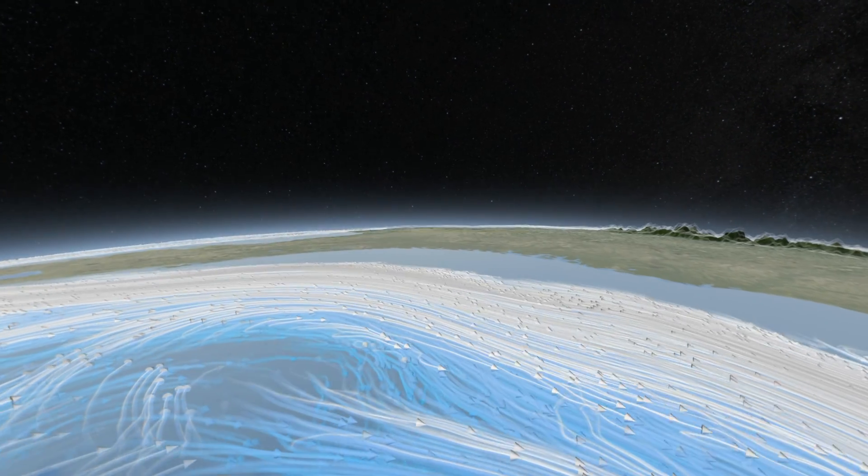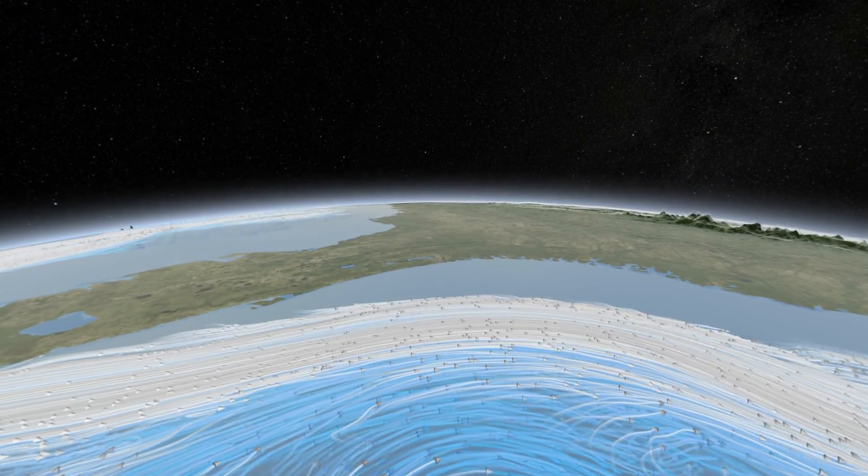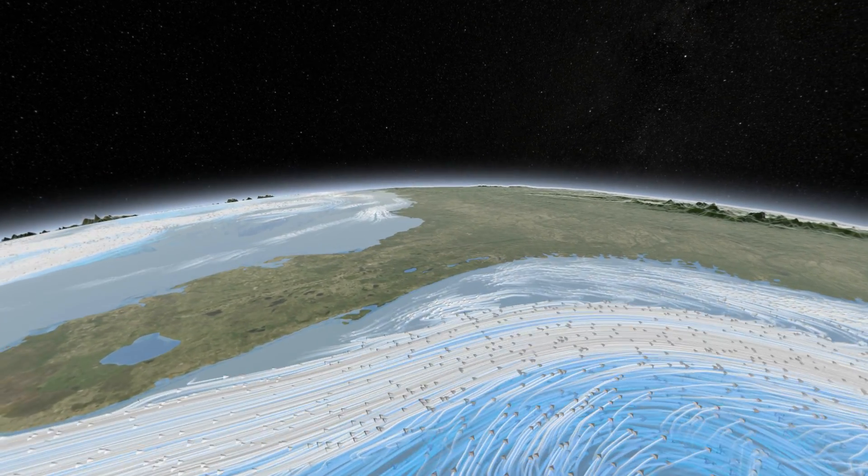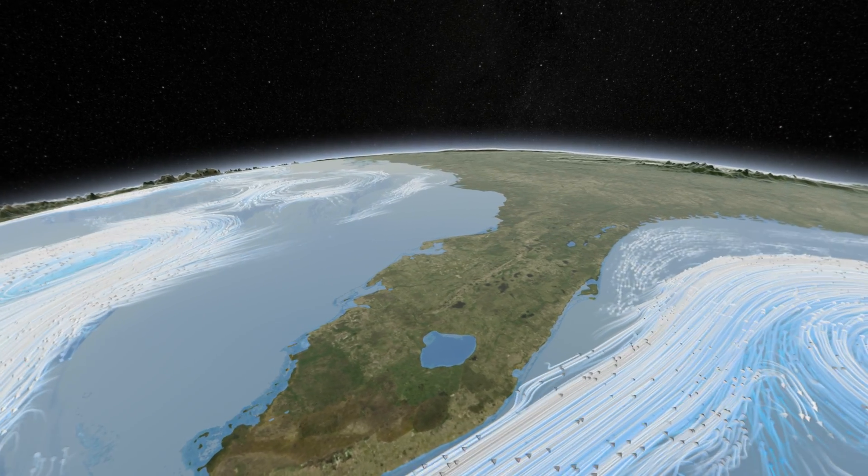Earth's climate engine has countless moving parts: tides and terrain, crosswinds and currents, all working to equalize temperatures around the globe.